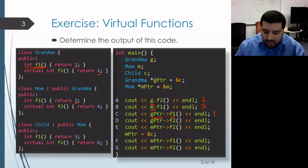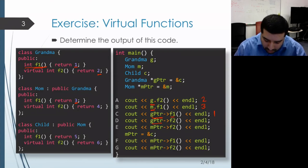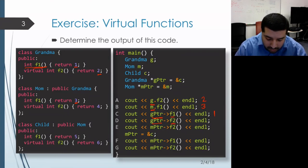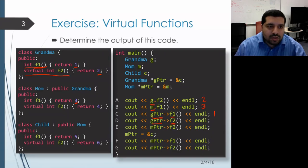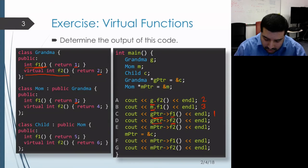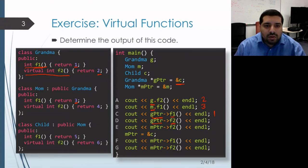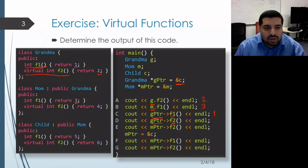Moving on to the next line, we have a similar situation where we're calling a member function through a grandma pointer, so our lookup will start in the grandma class. But now the member we're calling is F2. We look for a member named F2 within the grandma class, we indeed find it, and we see that it's virtual, which means we're going to get dynamic binding. So now we need to look at the dynamic type of the receiver object. Looking at the initialization of g pointer, we see that it's initialized to be pointing at a child object. Therefore, the dynamic type of the receiver is child, and we'll get the F2 function defined within child, which returns the value six.